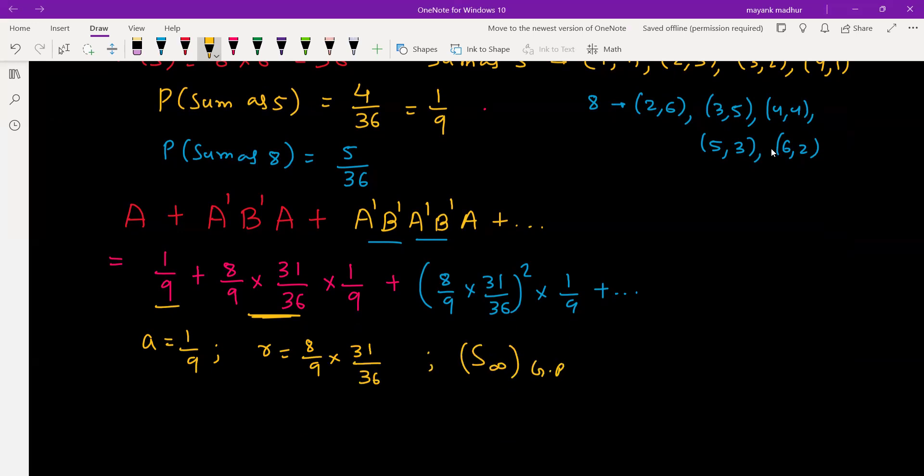What is sum of infinite terms of GP? The formula is first term divided by 1 minus common ratio. So it will be (1/9) divided by (1 - 8/9 × 31/36). Let's simplify this.